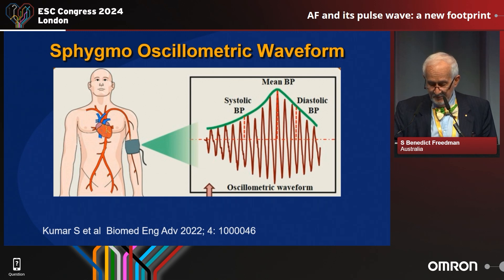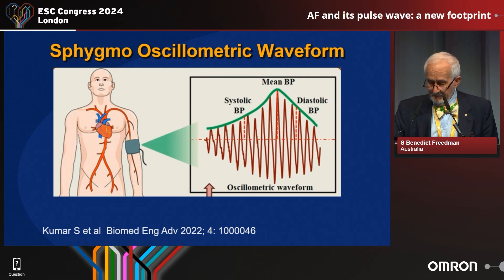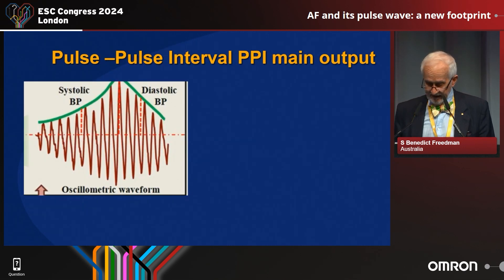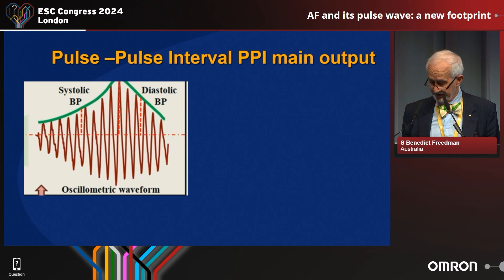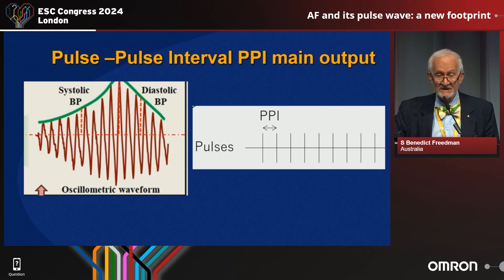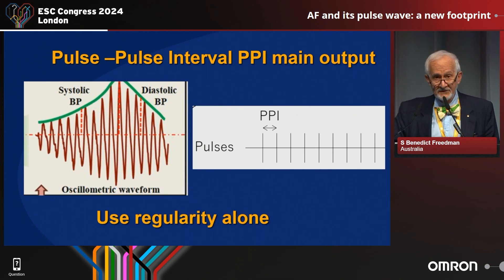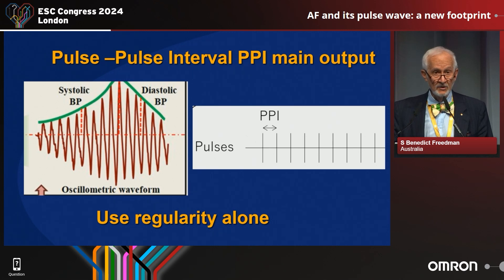Here we see a cuff and an oscillometric waveform on the right-hand side. This is from a study reported in 2022, Kumar et al. in Biomedical Engineering Advances. You can see that what is done here when looking for atrial fibrillation is just using the peak-to-peak variation — looking at the peaks of those pulse waveforms, it's called pulse wave difference, the peak-to-peak interval. This variability and irregularity is what is used in most algorithms to detect atrial fibrillation.